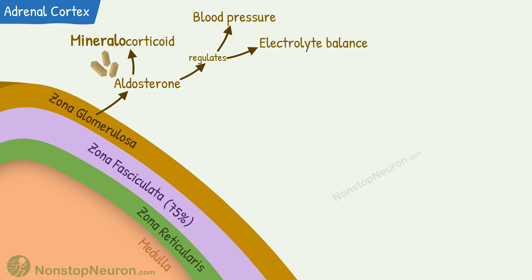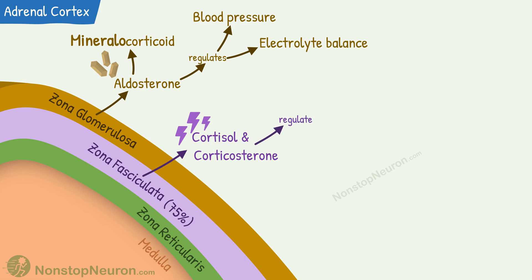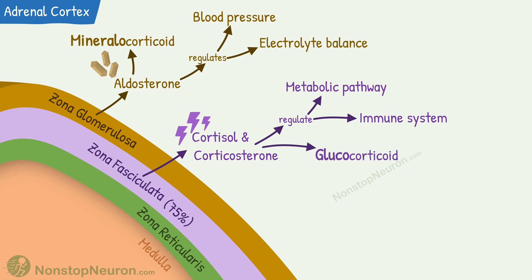Zona fasciculata forms 75% of the adrenal cortex. It principally secretes cortisol and corticosterone. They are the major endogenous corticosteroids and regulate metabolic pathways and the immune system. They are considered glucocorticoids because they increase blood glucose levels, and their deficiency causes hypoglycemia.